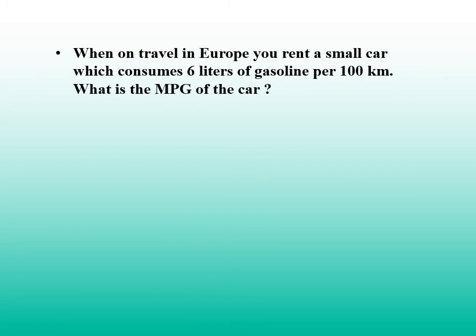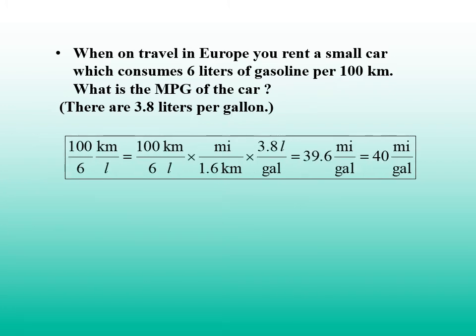When on travel in Europe, you rent a small car which consumes 6 liters of gasoline per 100 kilometer. What is the mpg miles per gallon of the car? There are 3.8 liters per gallon. The solution is 100 kilometers divided by 6 liters equals to 40 miles per gallon.